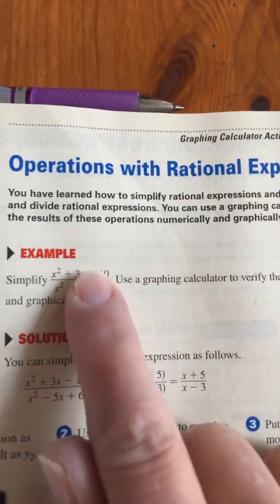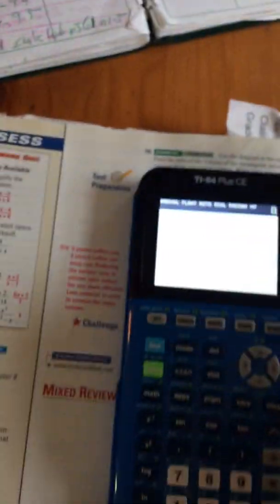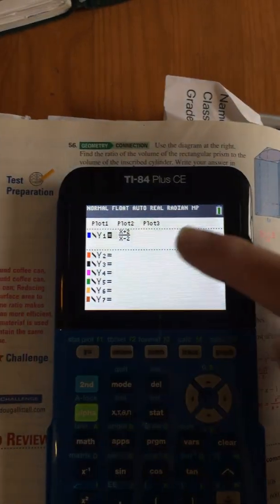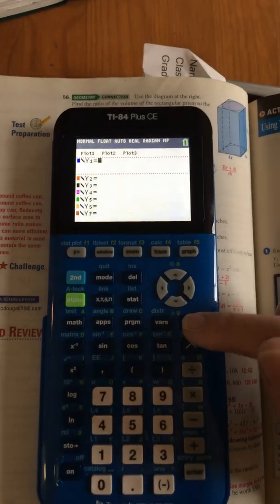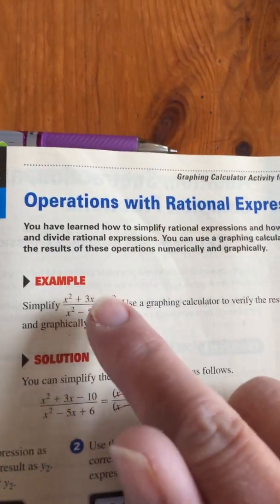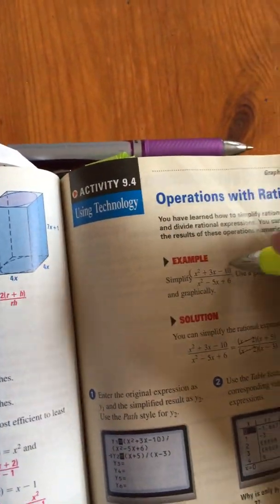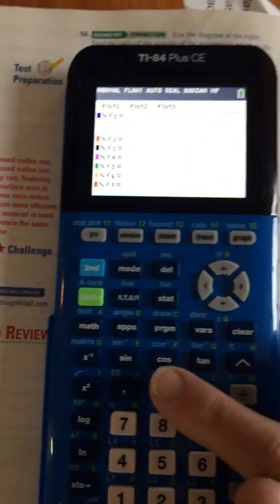So what you do is you put in your original problem. Go turn your calculator on, go to y equals, clear out what's in there. Next, if you don't have the shortcut menu, you need to put these in parentheses. Otherwise, your calculator doesn't know what's in the numerator and what's in the denominator.